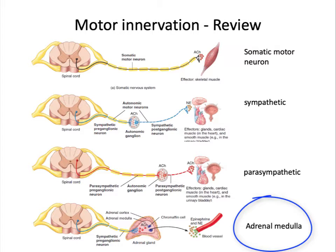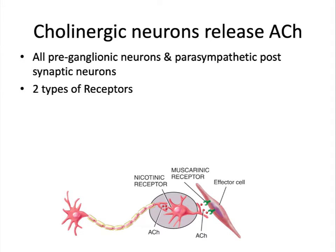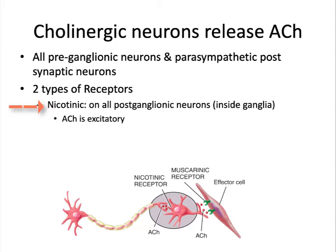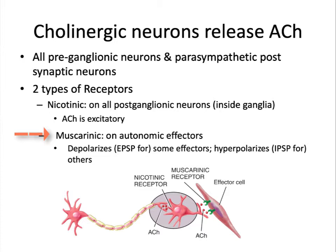Neurons that release acetylcholine are called cholinergic neurons. There are two types of receptors that recognize acetylcholine: nicotinic receptors, which are inside the ganglia on postganglionic neurons — here acetylcholine is excitatory and causes an action potential in the postganglionic neuron — and muscarinic receptors, which are on the effector cell. In some cases acetylcholine will be excitatory to the effector, and in some cases it's inhibitory, doing this by either depolarizing or hyperpolarizing the effector cell.